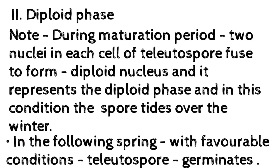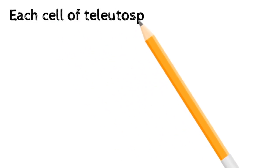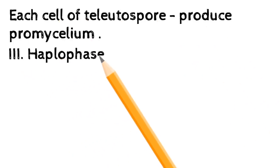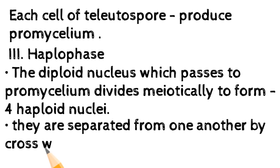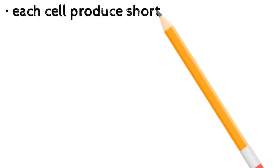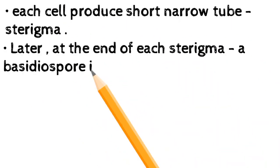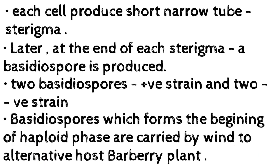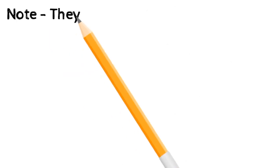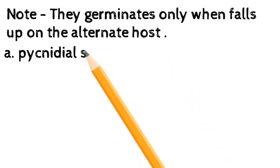In the following spring, under favorable conditions, the teliospore germinates. Each cell of the teliospore produces a promycelium — the haplophase. The diploid nucleus which passes to the promycelium divides meiotically to form four haploid nuclei. They are separated from one another by cross walls; this four-celled structure is the basidium. Each cell produces a short narrow tube called the sterigma, and later at the end of each sterigma a basidiospore is produced — two basidiospores of plus strain and two of minus strain. Basidiospores, which form the beginning of the haploid phase, are carried by wind to the alternative host, the barberry plant. Note: they germinate only when they fall upon the alternate host.